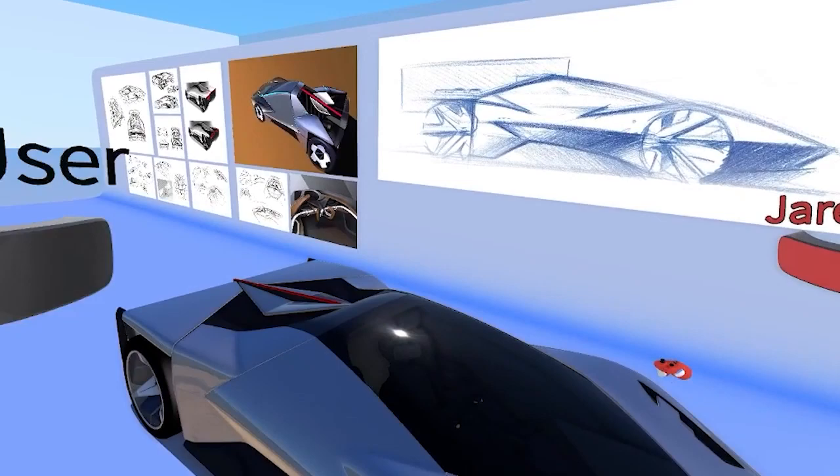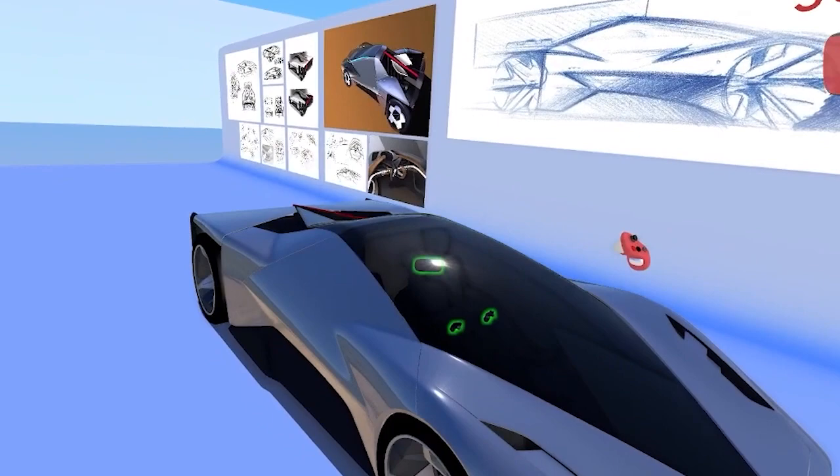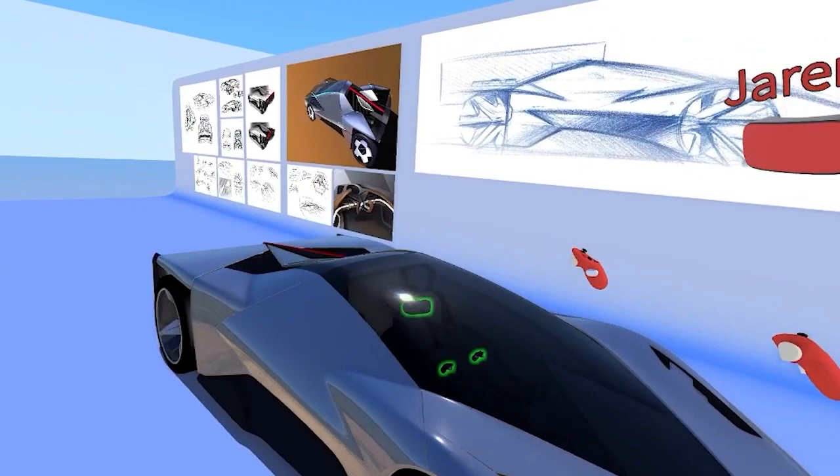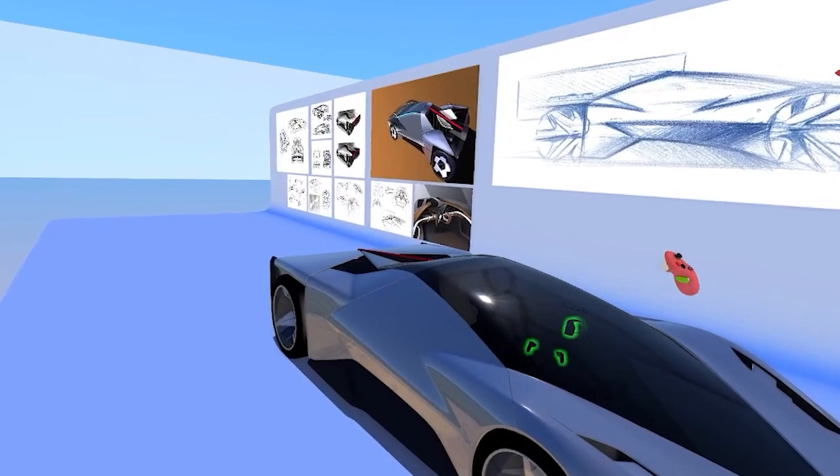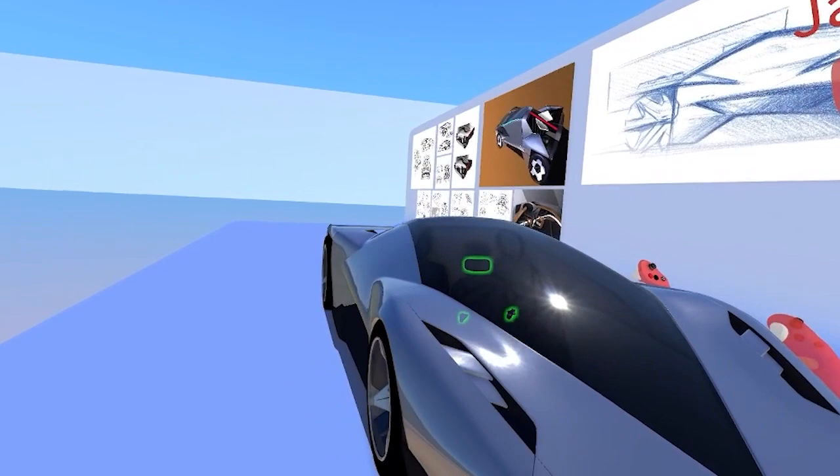And nothing else gives you that one-to-one scale representation of the exterior, the proportions, the stance and everything. It's like, you put hours and hours into a digital model on a desktop computer and then you mill it full size and it was totally different. And you still have no idea what it feels like if you're in it, unless you build a wireframe buck or something.